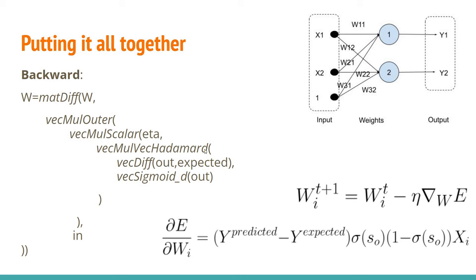We need to apply a Hadamard vector multiplication, then multiply with the scalar eta — in this case the learning rate. If you haven't watched the previous video this may be difficult to follow, so please watch the previous video with the blueprint for the neural network. Finally we compute the outer product, compute the difference, and update the weights matrix — everything according to this formula.